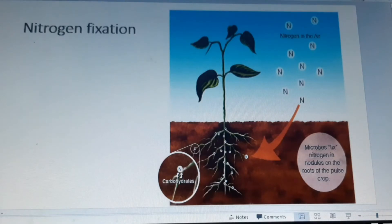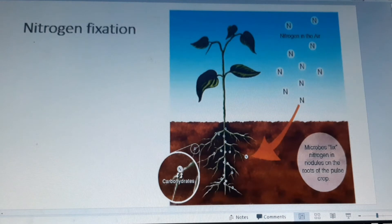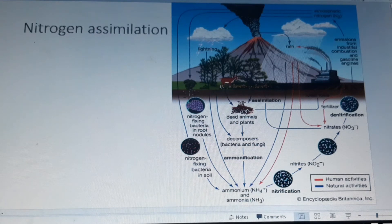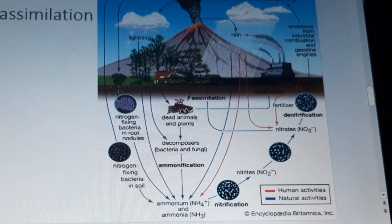Some of these bacteria live in the roots of plants, mostly in the legume family. In these roots, they make ammonia for the plant, and the plant gives them carbohydrates. Other plants take nitrogen compounds out of the soil through their roots. All nitrogen in animals comes from eating plants.